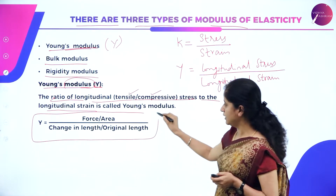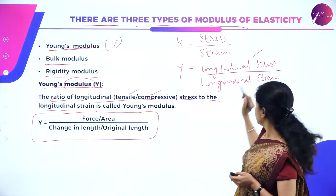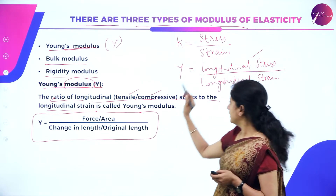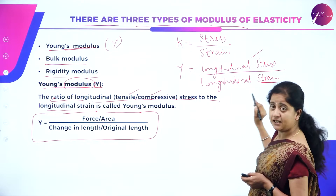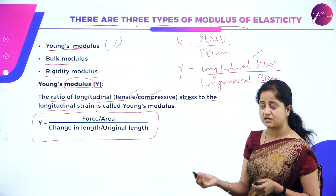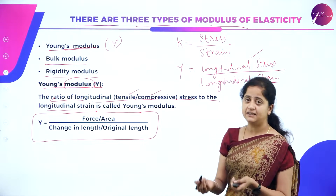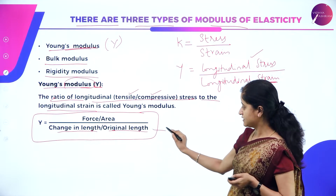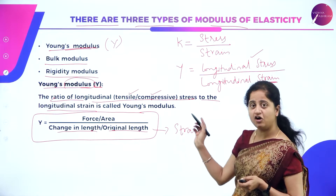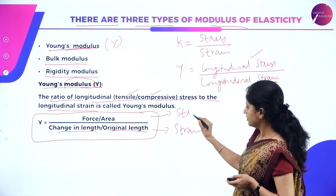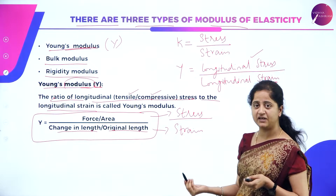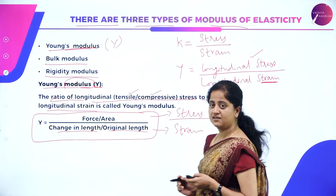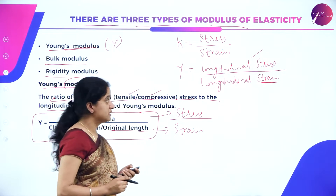In Young's modulus, the type of stress involved is longitudinal stress. So Y = longitudinal stress / longitudinal strain = (F/A) / (ΔL/L), where F/A is force per unit area (stress) and ΔL/L is change in length to original length (longitudinal strain).